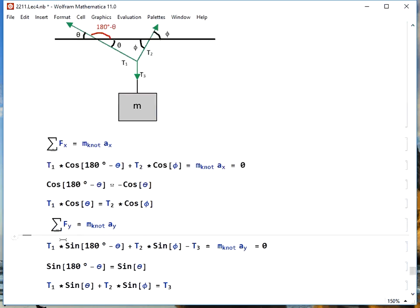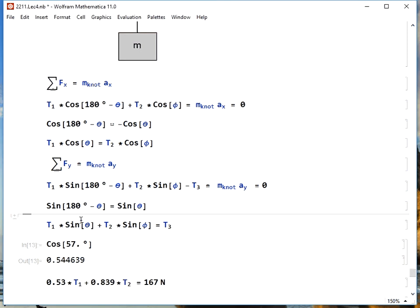The y direction, we do the same thing. We just change cosines to sines. And we have the additional y force of T3 pointing downward, so we get a negative T3. For sine, the sine of 180 minus theta is the same as sine of theta. We rewrite our equation and we get this.